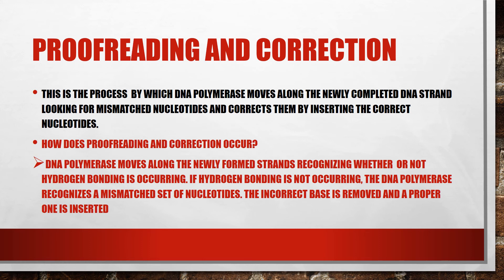How does proofreading and correction occur? DNA polymerase moves along the newly formed strand recognizing whether or not hydrogen bonding is occurring. If hydrogen bonding is not occurring, the DNA polymerase recognizes a mismatched set of nucleotides. When DNA polymerase detects the mismatching, it corrects the mistake by removing the incorrect base and inserting the proper base.